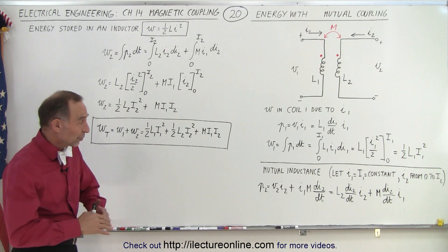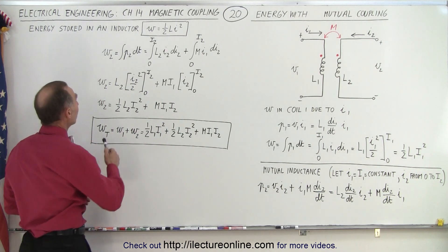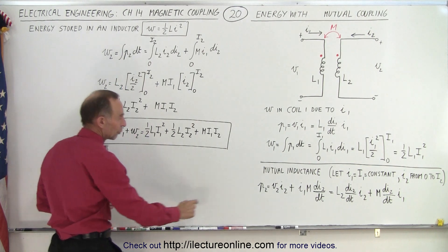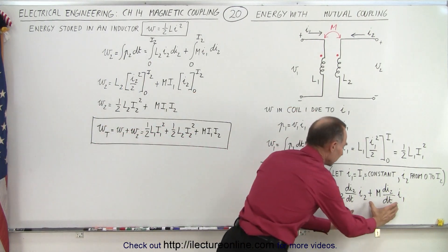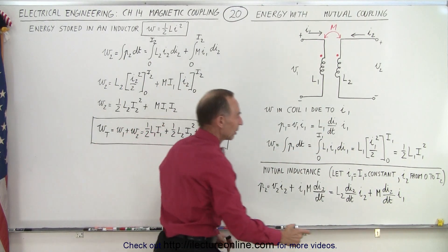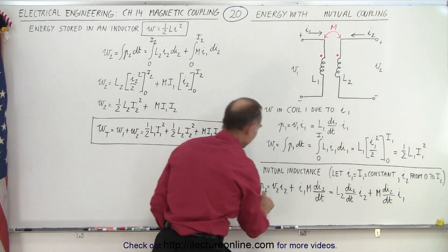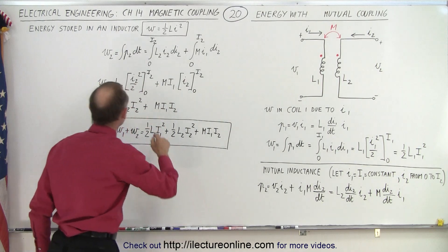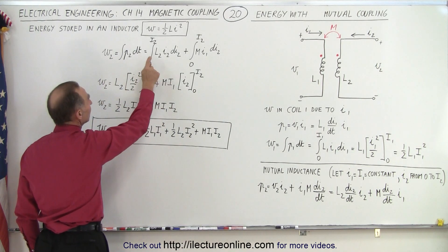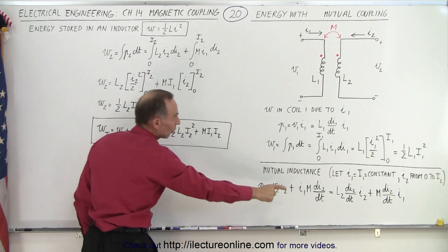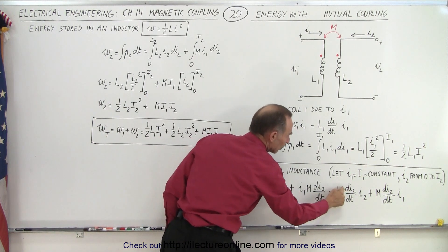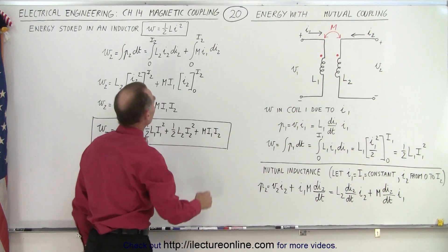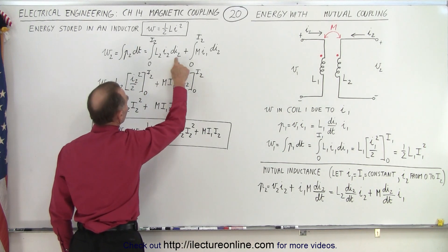Now we integrate to find w2: we integrate power 2 times dt. Power 2 is the sum of those two terms, and cross-multiplying dt gives us power 2·dt. Integrating gives us the integral of those two terms: L2·i2·di2 and M·di2 times i1. Those are the two terms we need to evaluate.